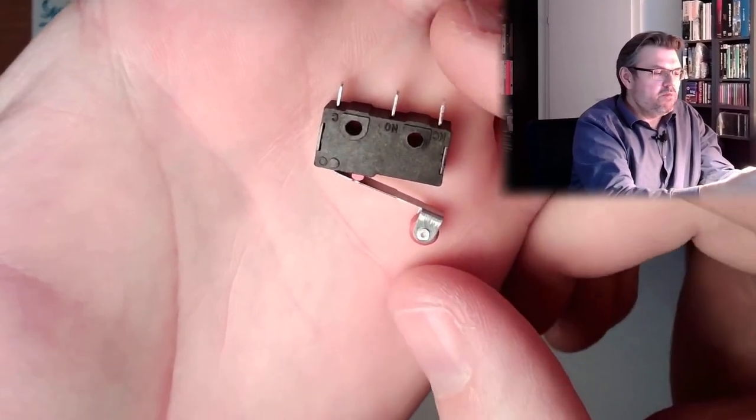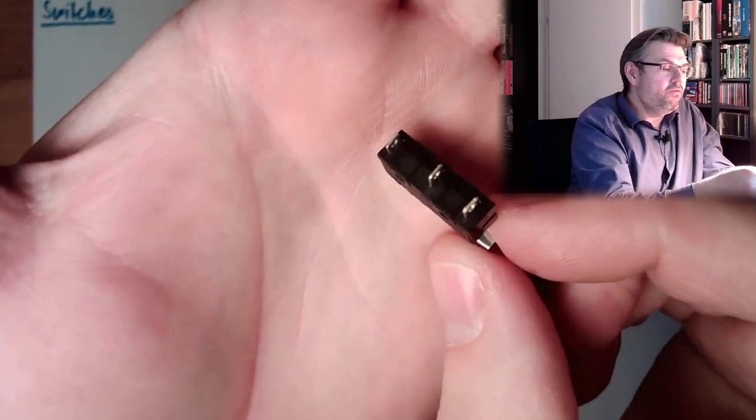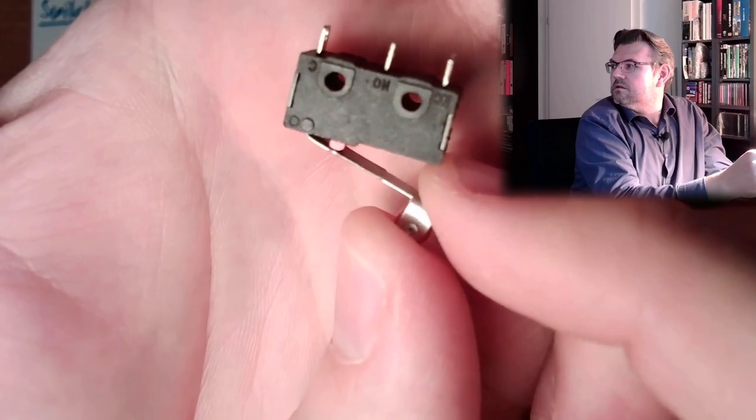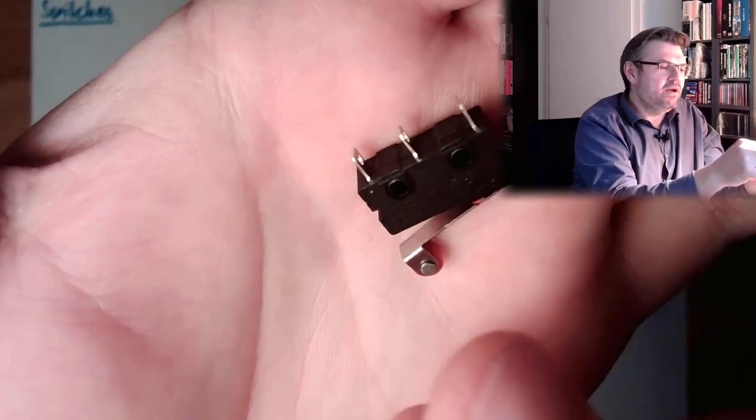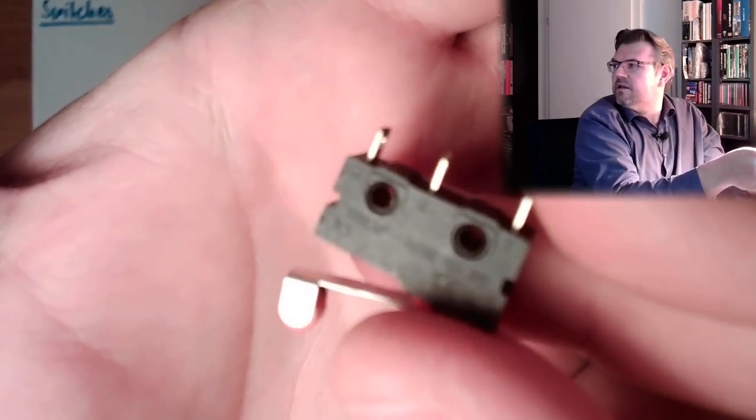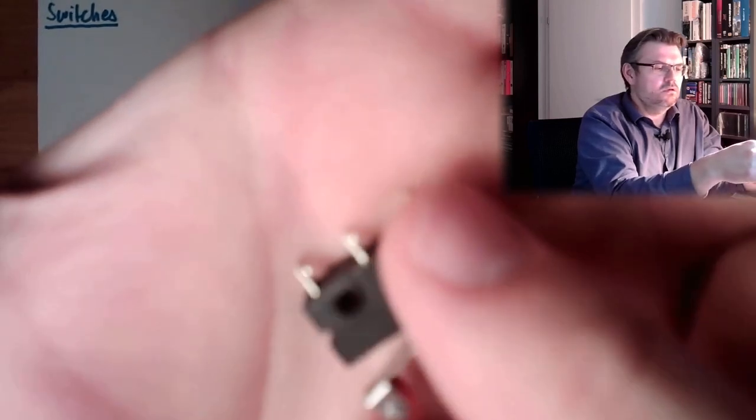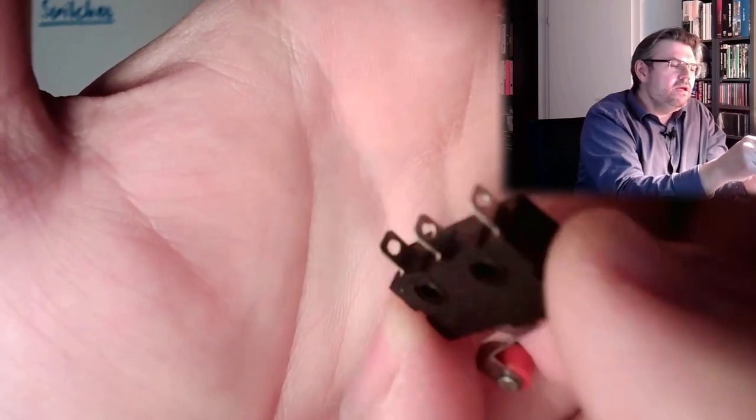Right now I'm talking about switches because these are mechanical switches. Look at this, how this is looking. Here is a miniature switch. So there is a lever, a roller lever, which can be operated. And then you hear a click. And here are three connectors, and you can see the three connectors are labeled. There is one C, there is one NO, there is one NC.